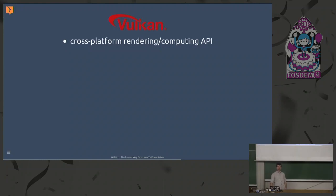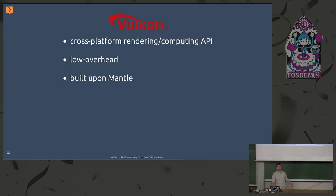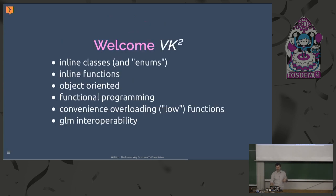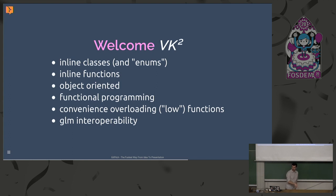Now, Vulkan. It's not only a cross-platform rendering but also a computing API — it's supposed to take over OpenCL too. It's really low-level: you have more than 1,000 lines for a single hello triangle. Vulkan originated from Mantle, donated by AMD, was released in 2016, and the last release was at the beginning of this year. We have inline classes and inline functions, it's object-oriented — all VK objects have lots of functions — functional programming, convenience overloading, and low functions that call the very end function of the LWJGL binding just before going to native. It also plays nicely with GLN.